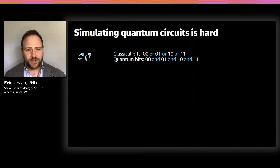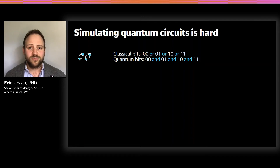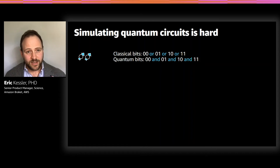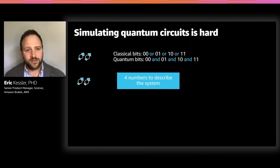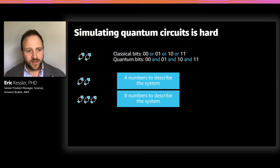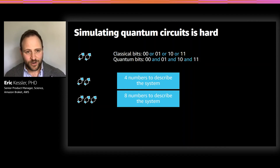But simulating quantum circuits is hard. Naively, if you just want to store the state of two qubits, because of what's called superposition, you actually need to store the amplitudes of every possible configuration — the part of my state in configuration |00⟩, how much is in |01⟩, how much is in |10⟩, and how much is in |11⟩. So to write down the state of a two-qubit system, I need four complex numbers. If I add one more qubit, I need eight numbers. So we double at every step — adding one qubit doubles the memory requirement to store the state.